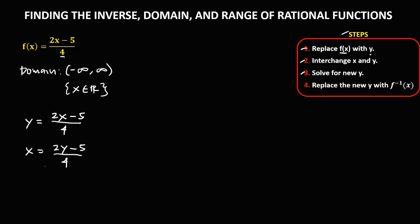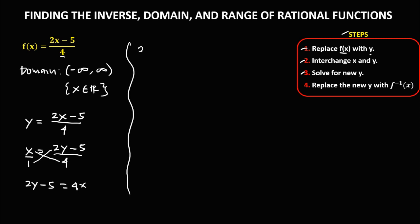Then to solve for the new y, using cross multiplication — this is over 1 — so 1 times 2y minus 5 equals x times 4, which gives 4x. Then to solve for y, we have 2y minus 5 on one side, so we get 4x plus 5. Divide both sides by 2, so y equals 4x plus 5 over 2.